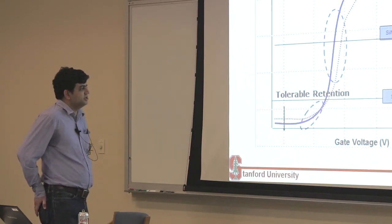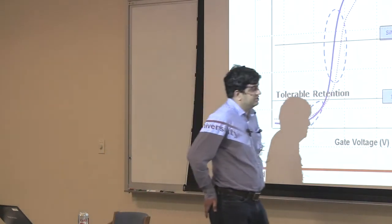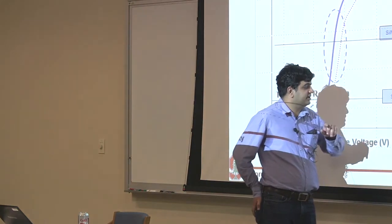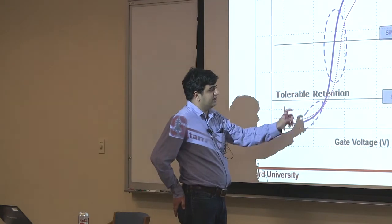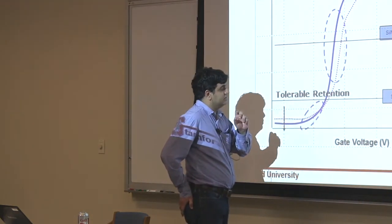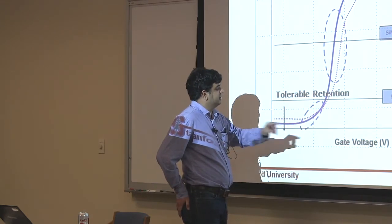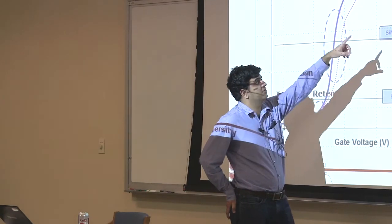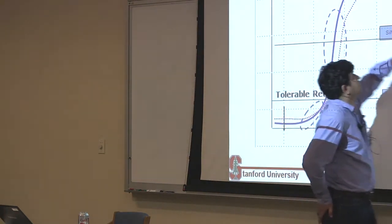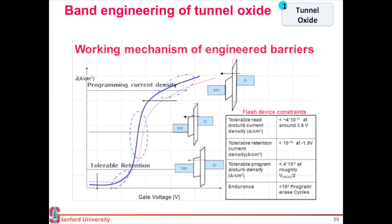There's a lot of research going on. People are trying, instead of using just oxide, why not use oxide-nitride? Maybe you can have a slightly higher physical thickness but a lower EOT, so you can maintain the same retention but program it much faster — because when programming, you'll just be seeing the barrier through your oxide. So there's a lot of research going on in the area of band engineering your tunnel oxide.